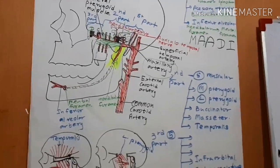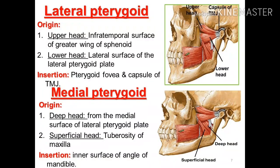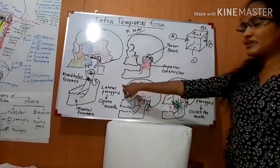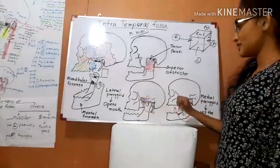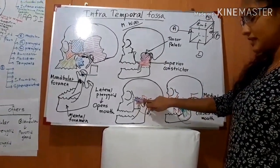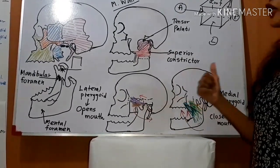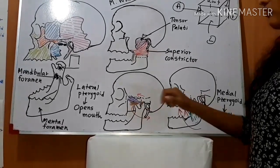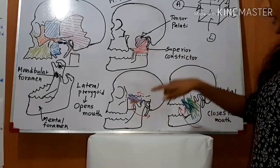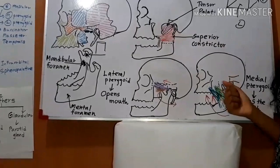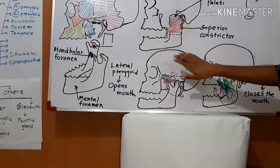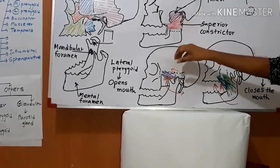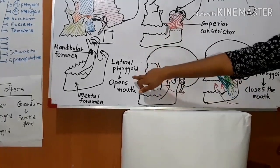Now let's talk about the two muscles of the infratemporal fossa. The lateral pterygoid muscle has an upper head and a lower head. The upper head arises from the roof of the infratemporal fossa, and the lower head arises from the lateral surface of the lateral pterygoid plate of the sphenoid bone. They converge and form a tendon inserted into the pterygoid fovea on the inner surface of the neck of the mandible. When this muscle contracts, it pulls the condyle forward and the lower end of the mandible goes downward, aiding in opening of the mouth.